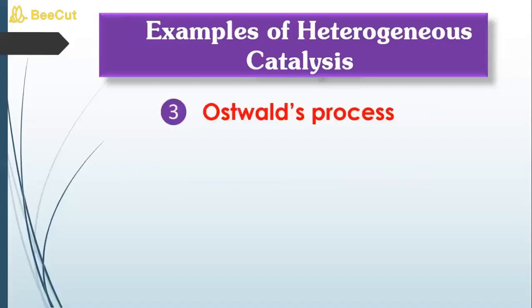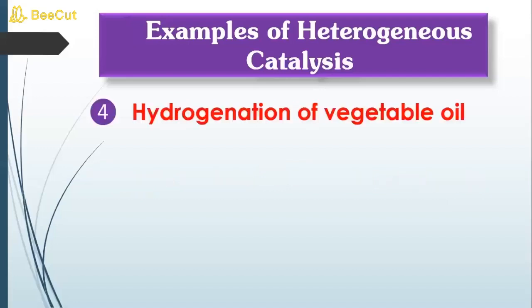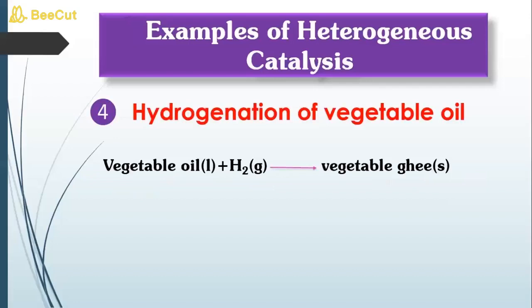The third example is Ostwald's process — the first step involves ammonia and oxygen as gases, with the catalyst being rhodium or platinum, both in the solid state. The fourth example is hydrogenation of vegetable oil, where vegetable oil is a liquid, H₂ is a gas, and nickel acts as the catalyst in the solid state — making all of these examples of heterogeneous catalysis.